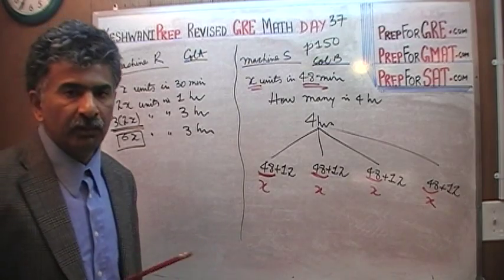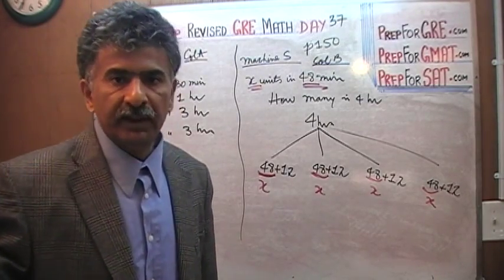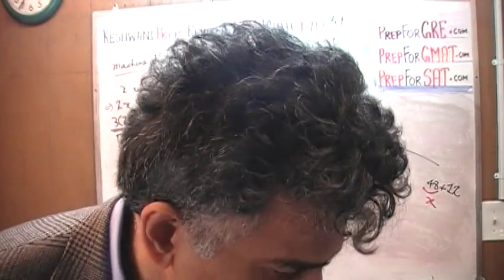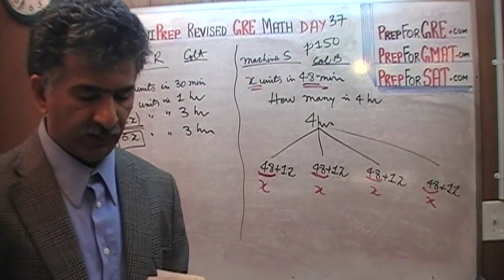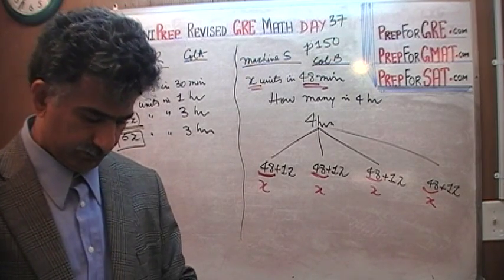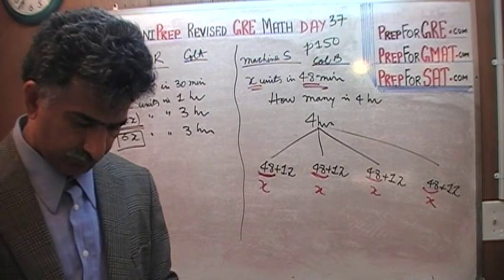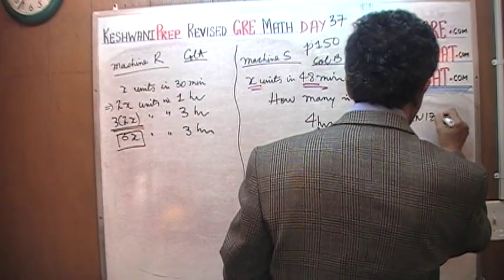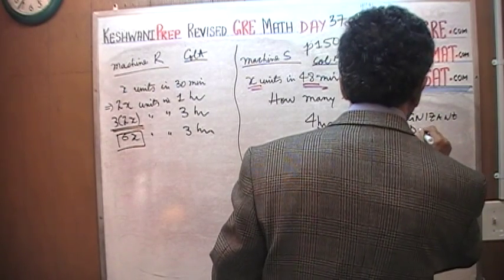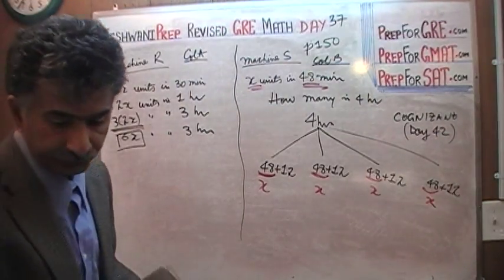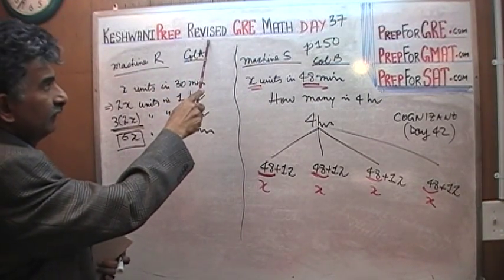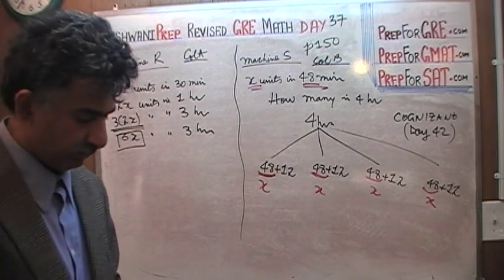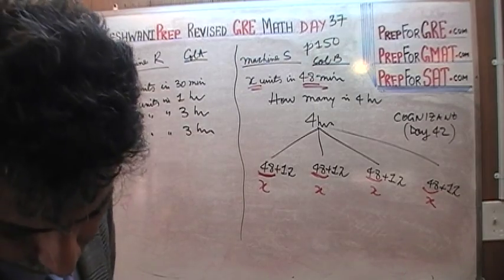You must always be cognizant of what is given to you and what is being asked — don't just keep solving until the end without checking. The word 'cognizant' means to be aware of your surroundings, to have knowledge of what is going on. You can find it on day number 42 — just search for Keswani Prep vocabulary, day 42, and it will pop right up.